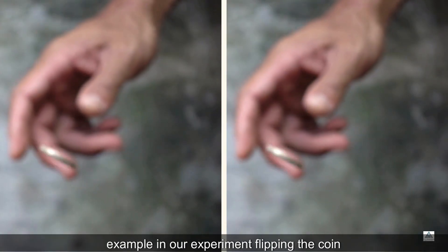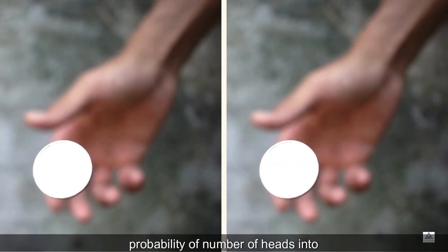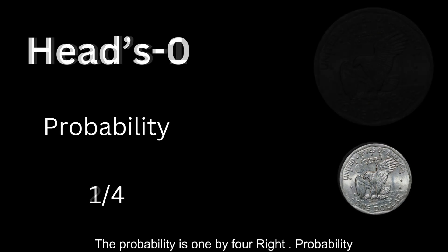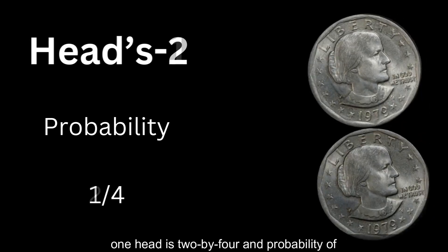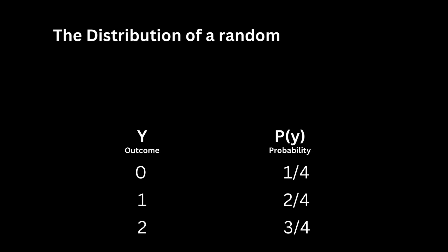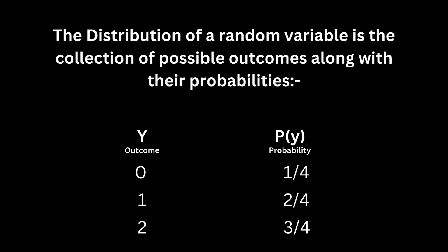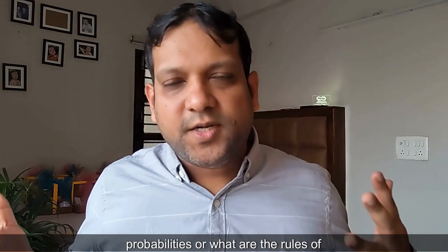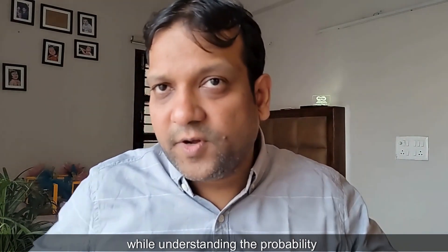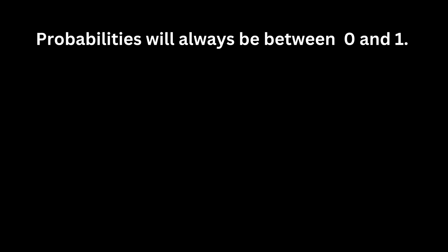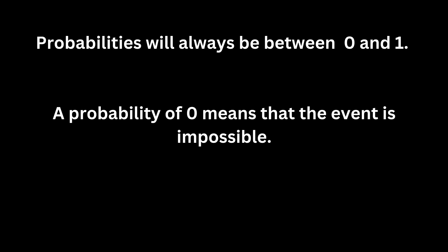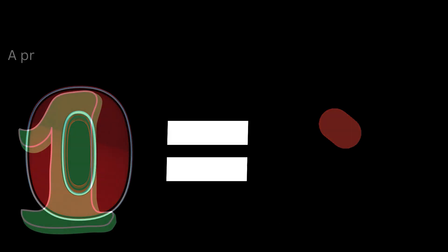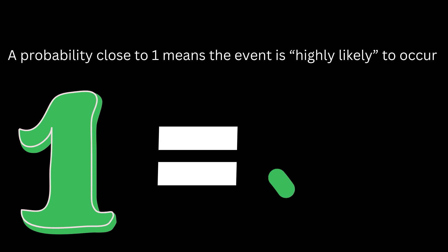Let's understand this with an example. In our experiment of flipping the coin, let's take two coins and find the probability of the number of heads in two tosses. Suppose we get no heads — the probability is one by four. The probability of getting one head is two by four, and the probability of getting two heads is one by four. The distribution of a random variable is the collection of possible outcomes along with their probabilities. Now let's focus on the properties of probabilities. Probabilities will always be between zero and one. A probability of zero means the event is impossible, and a probability of one means the event is guaranteed to happen. A probability close to zero means the event is not likely, and a probability close to one means the event is highly likely to occur.